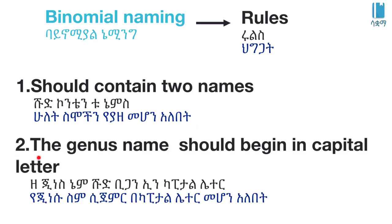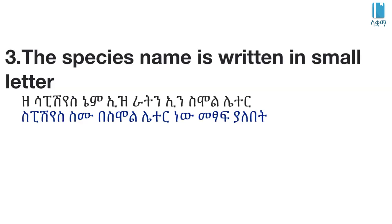The second rule: the genus name should begin with a capital letter. The genus name's first letter must be a capital letter. The third rule: the species name is written in small letters — the species name must be written in lowercase.